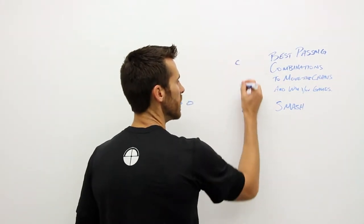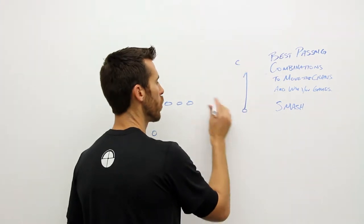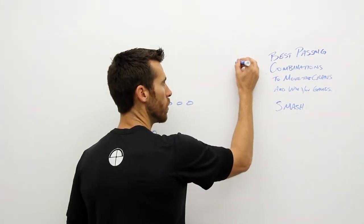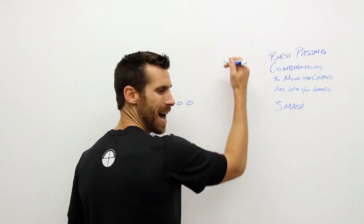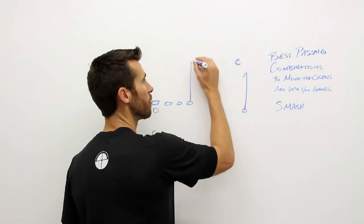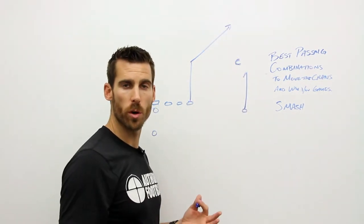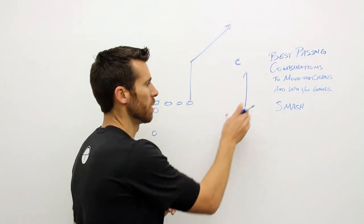Now what we're doing is running a hitch route from our number one receiver. We want that corner to have to make a decision high-low here, so we've got a low route, which means we need a high route. The only way to get there is to send number two out over the top with a corner route, and that's a smash concept.